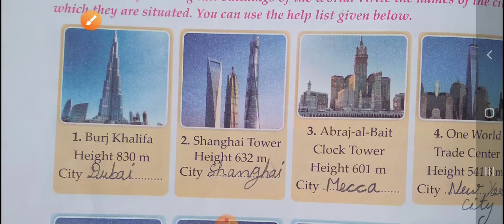First, Burj Khalifa, height 830 meters, city is Dubai. Second, Shanghai Tower, height 632 meters, city is Shanghai.